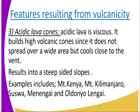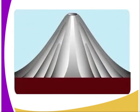Number three, we have the acidic lava cones. Acidic lava is viscous and builds up steep volcanic cones since it does not spread over a wide area, but accumulates around the vent, resulting in a steep-sided dome. Examples include Mount Kenya, Mount Kilimanjaro, Mount Suswa, Menengai, and Ol Doinyo Lengai. Let us see the image — it looks like that.